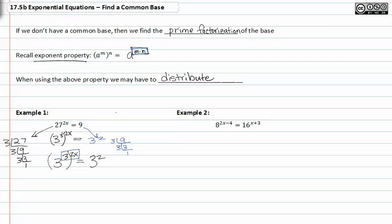So that's the case right here. This becomes 3^(6x) = 3^2.